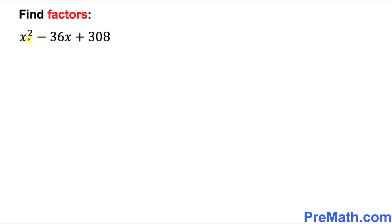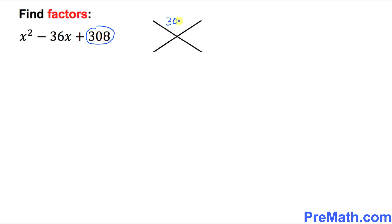Here is our next example. We want to find the factors of this quadratic expression. Again, the leading coefficient is 1. Write down the constant 308 on the top of the X factor, and the coefficient of X, which is negative 36, at the bottom.